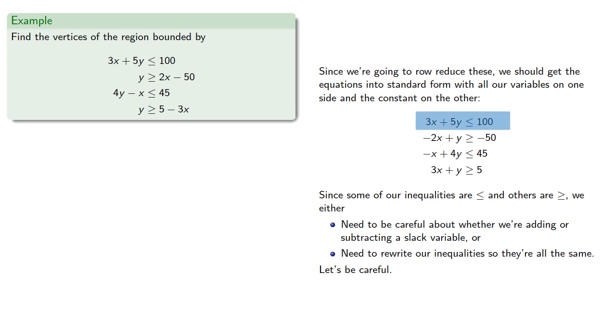Since 3x plus 5y is less than or equal to 100, then we need to add something to make it equal to 100. Since 2x plus y is greater than or equal to negative 50, we need to subtract something.